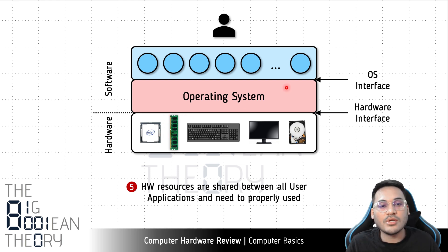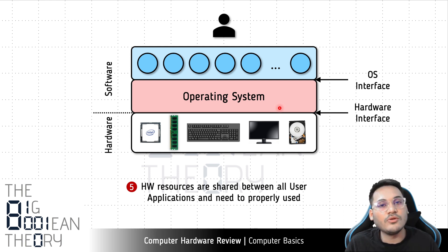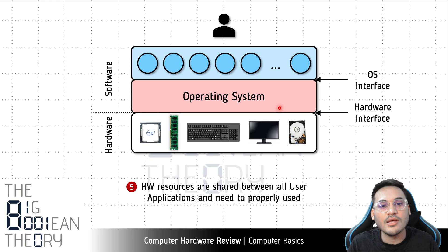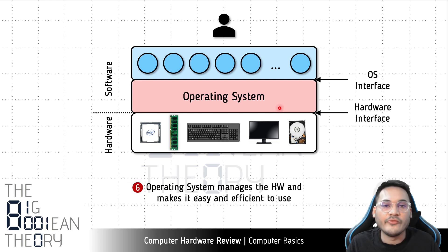We want proper allocation of these shared and limited resources. This is where the operating system comes in: it manages all the hardware resources, keeps track of how much is available, and when user applications request resources the OS allocates them in a proper and fair way. It also ensures that no resources are idle, maximizing system performance by keeping resource utilization higher. In this way the operating system is a resource manager — an intermediary between the hardware and the applications.